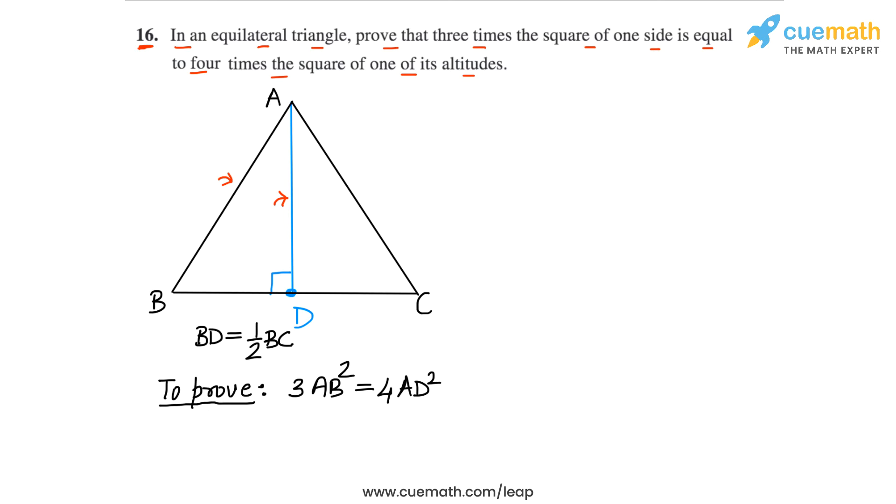So here's what we're going to do now we are going to apply the Pythagoras theorem in triangle ABD. I'm going to highlight this triangle. So we are going to apply the Pythagoras theorem to this triangle because we want to relate the side AB with the altitude AD.